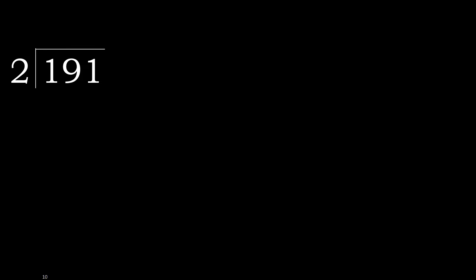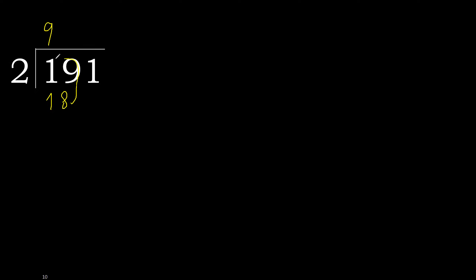191 divided by 2. 1 is less, therefore next. 19 is not less, therefore work with 19. 2 multiplied by which number is nearest to 19 but not greater? 2 multiplied by 9 is 18, which is not greater. 19 minus 18 is 1. Next.